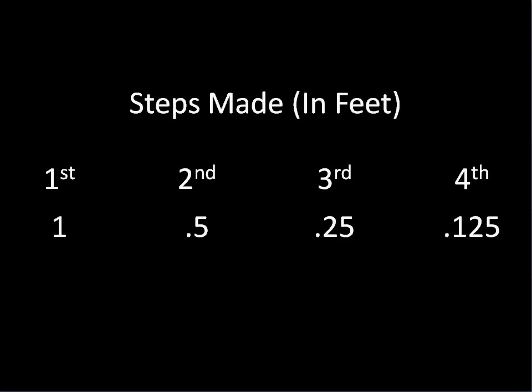So he moves a foot, then a half a foot, then a quarter of a foot, then an eighth of a foot. Now you should notice there's a common ratio between these. Basically, if you multiply the previous step by a half, you get the next step. That shouldn't be much of a surprise, as that's exactly how we defined the process originally.